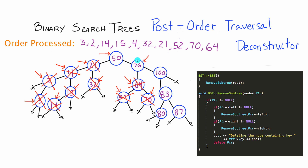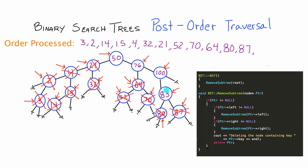We fall back to node 76, which has already looked left but not right. Looking right it has a child, so we call remove subtree with a pointer to node 100. Node 100 looks left, and node 83 looks left finding a child, so we call remove subtree with a pointer to node 80. Node 80 has no children and its memory is deallocated. We fall back to node 83, which looks right and finds a right child, node 87. Node 87 has no children, so its memory is deallocated. Node 83 has now looked left and right, so we deallocate node 83. Node 100 looks right, finds no right child, and its memory is deallocated. We fall back to node 76, which has now looked left and right, so node 76 is deallocated.